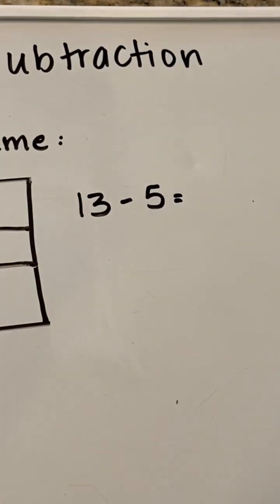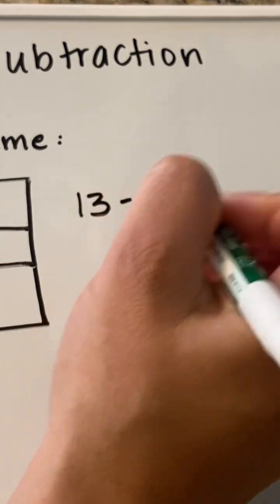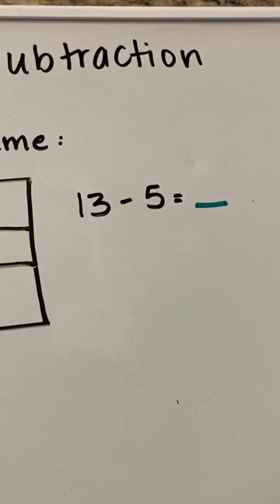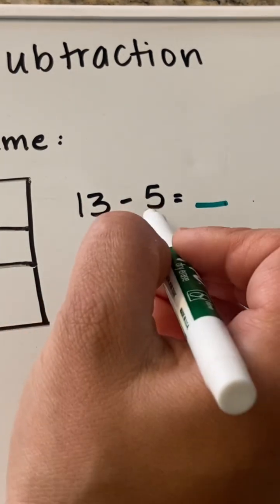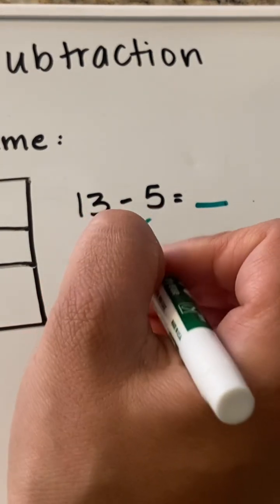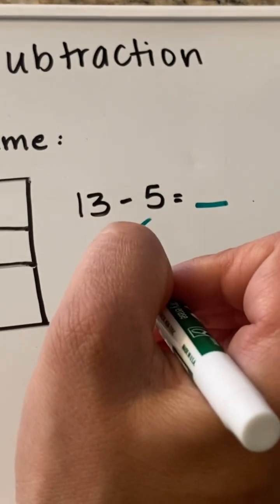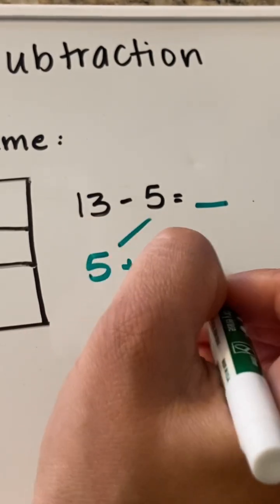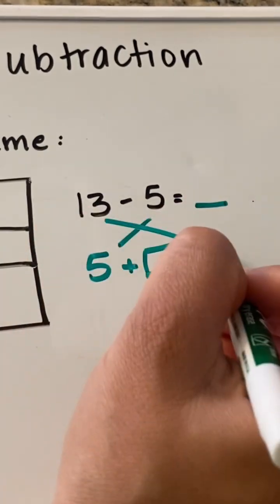And the best way that we do that, we're looking at 13 minus 5 is what? We want to switch that around to make it into an addition problem. We are going to take our 5 plus what equals 13.